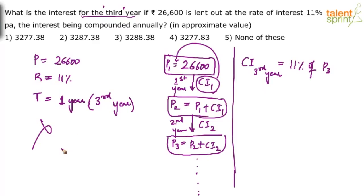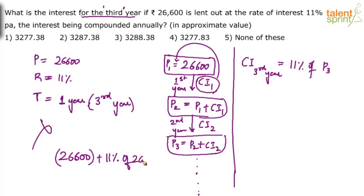There was 26600 deposited in the first year. We get 11% interest on this. So 26600 plus 11% of 26600 equals 111% of 26600. Basically, after the first year, 26600 becomes 111% of 26600.